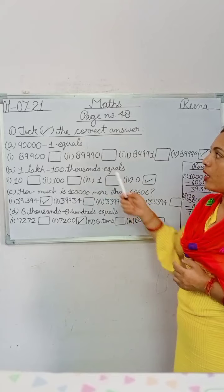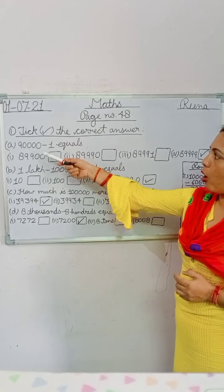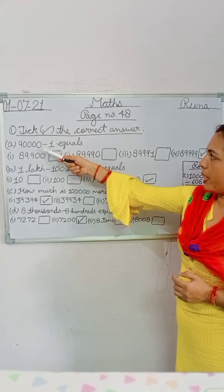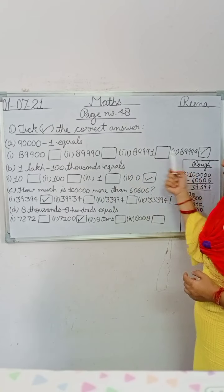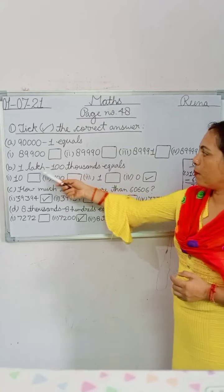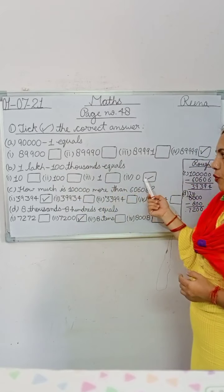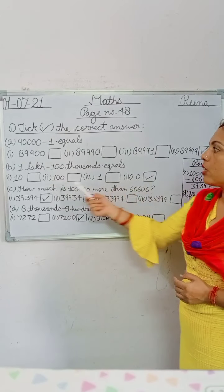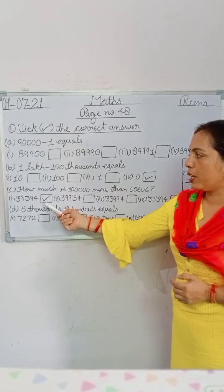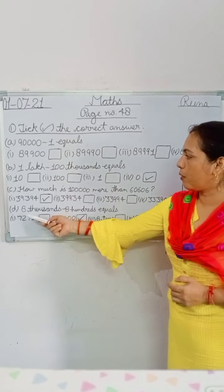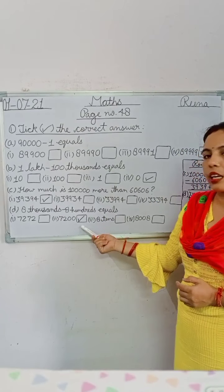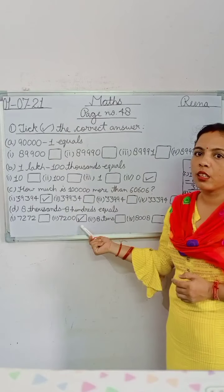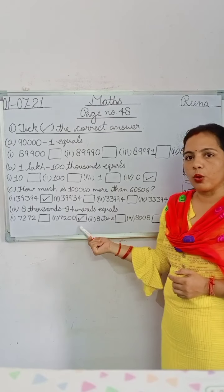To summarize question 1: for A part, option number four is correct. For B part, option number four is correct. For C part, option number one is correct. For D part, option number two is the correct option.